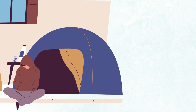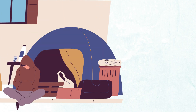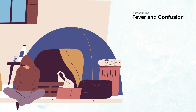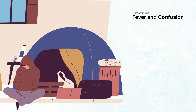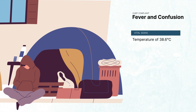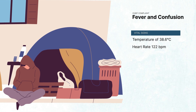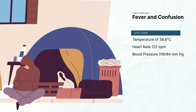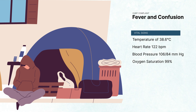A 72-year-old homeless man was found in his tent with a fever and confusion. On physical exam, he is disoriented with a temperature of 38.6 Celsius, a heart rate of 122 beats per minute, a blood pressure of 106 over 84, and an oxygen saturation of 99% on room air.